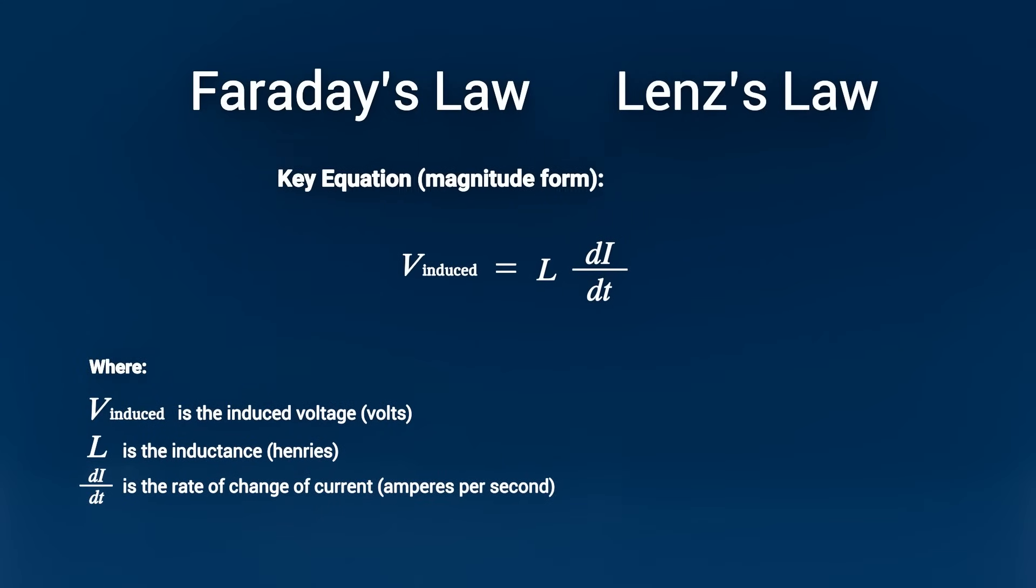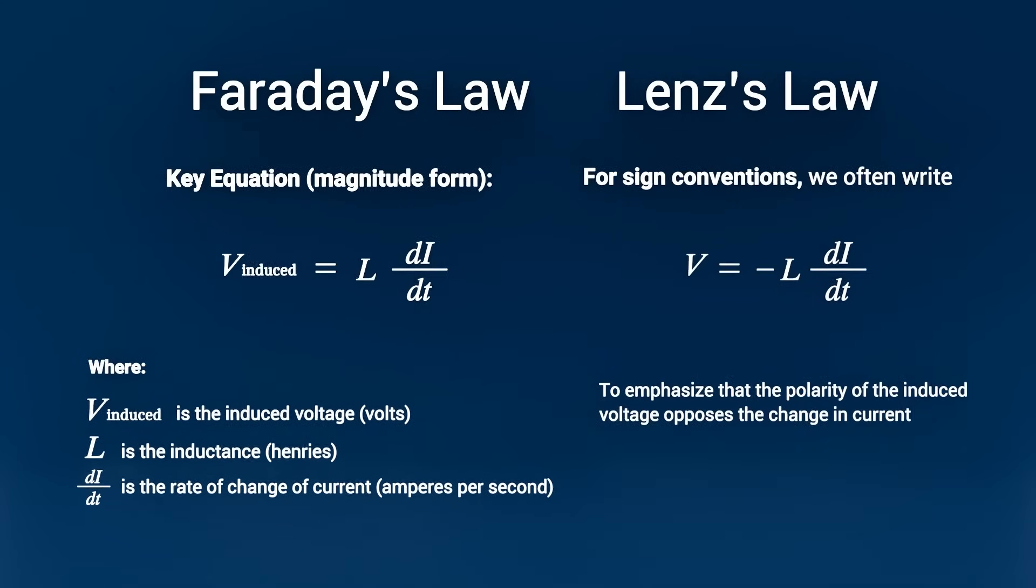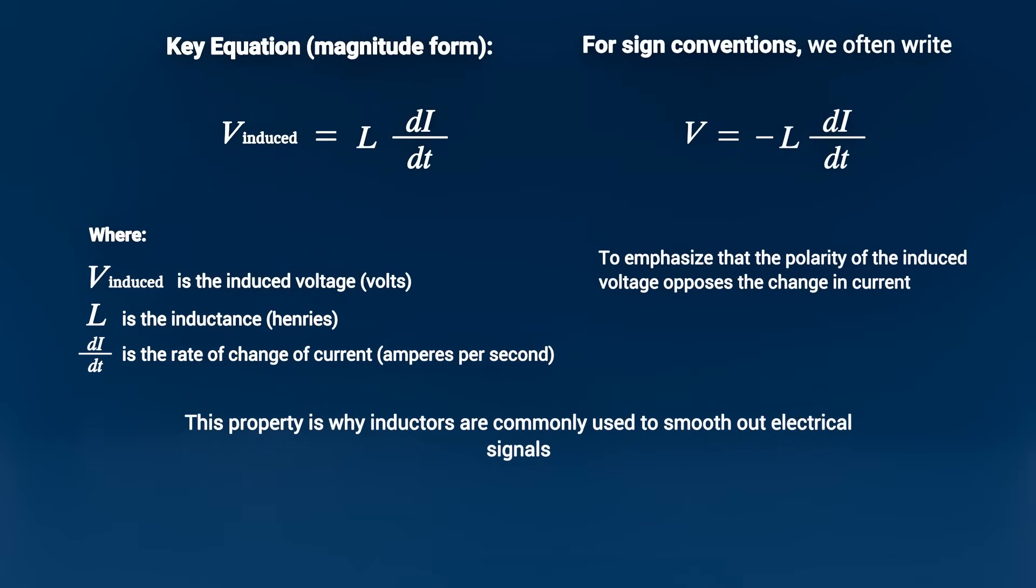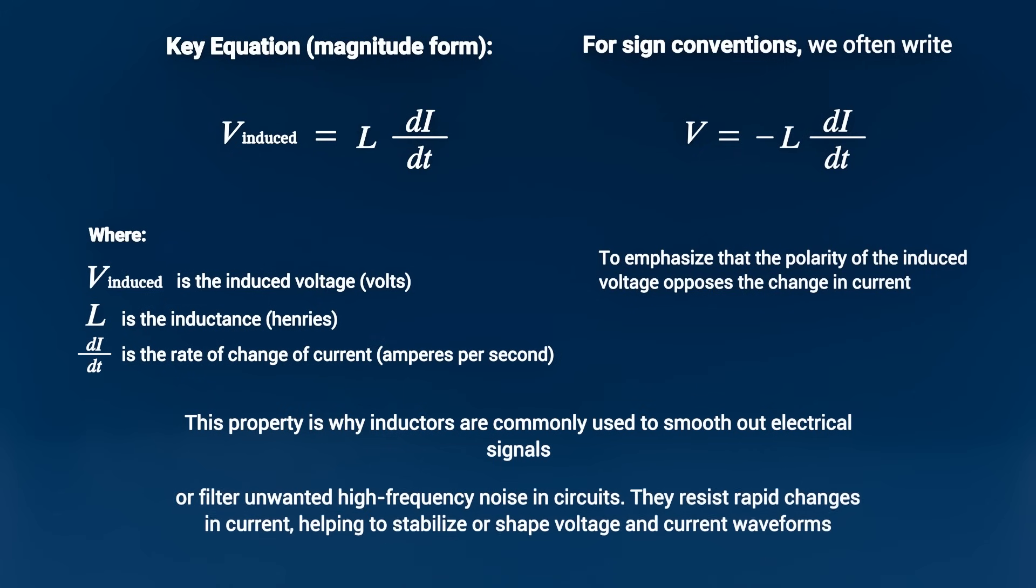If we consider sign conventions, we often write V equals minus L dI over dT to emphasize that the polarity of the induced voltage opposes the change in current. This property is why inductors are commonly used to smooth out electrical signals or filter unwanted high frequency noise in circuits.